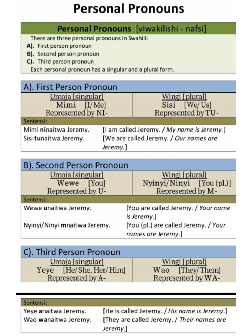The third person pronoun is 'yeye,' meaning 'he' or 'she,' also 'him' or 'her.' It is represented by 'a' when constructing a sentence. For example: 'Yeye anaitwa Jeremi' — he or she is called Jeremi. Notice that 'yeye' is represented by 'a' in the sentence.